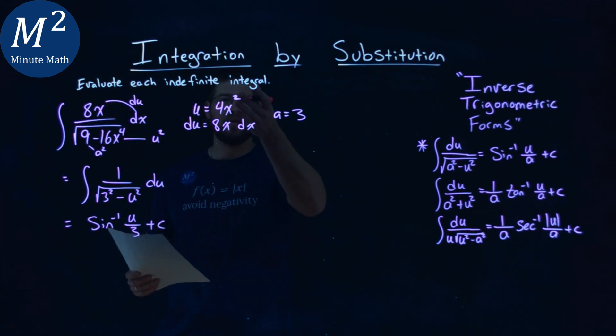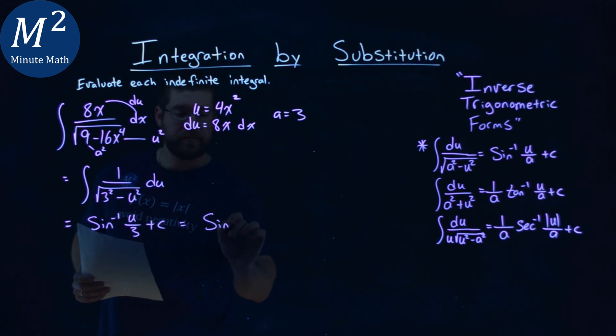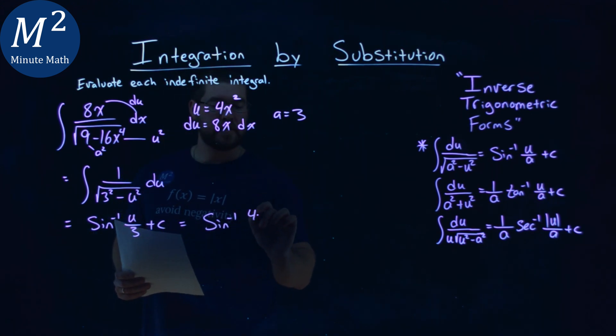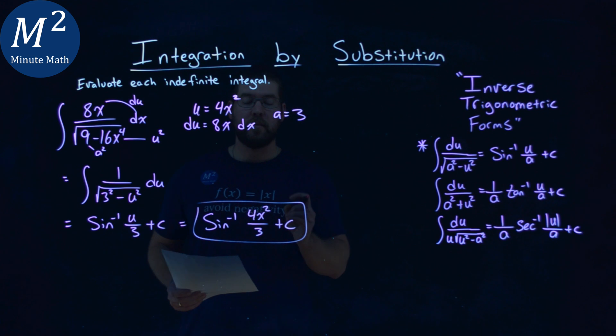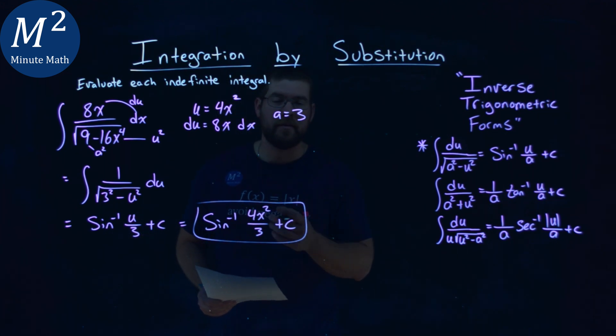And now we just plug 4x squared back in for u. We have the arc sine of 4x squared over 3 plus c. And there we have it, arc sine of 4x squared over 3 plus c is my final answer.